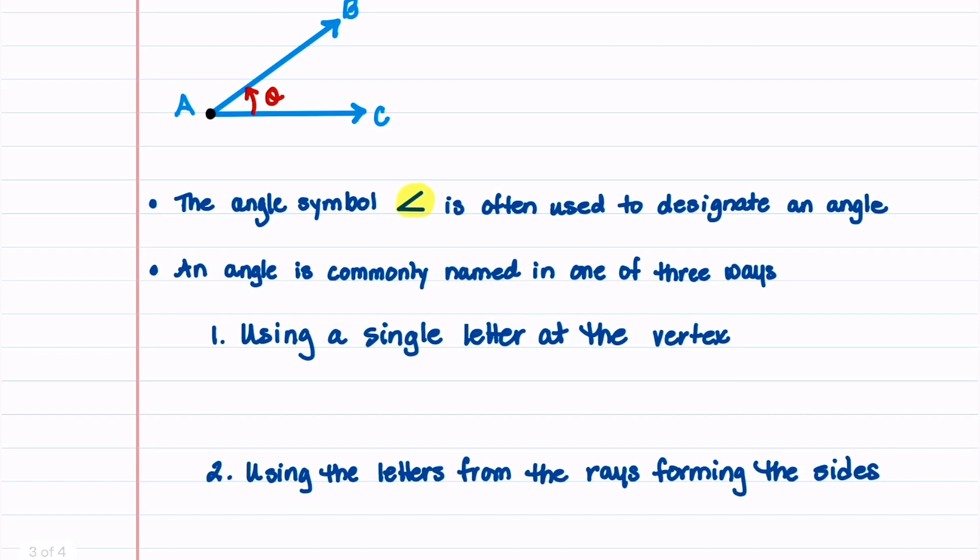The first way is to use a single letter at the vertex. So if we look up at this picture, we see letter A is at the vertex, so we would label this angle, use the angle symbol like that, and then say it's angle A.